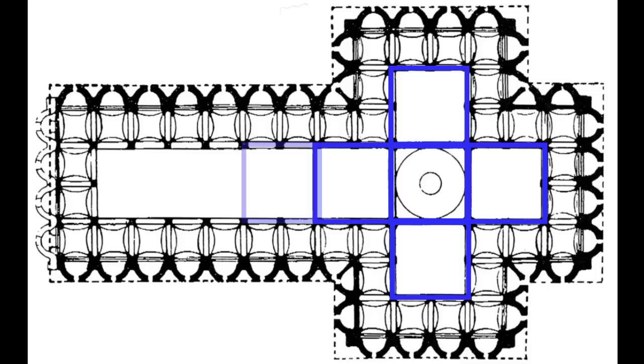A sense of circles, and semicircles, and squares, and rectangles that all relate to one another. Brunelleschi has created a mathematical system that is so self-evident, and makes so much sense, that there aren't other options. The mathematics determine the space.